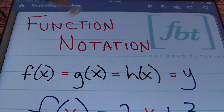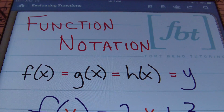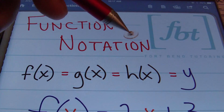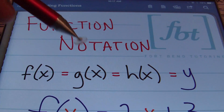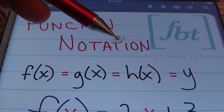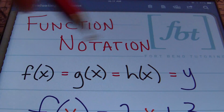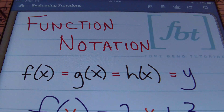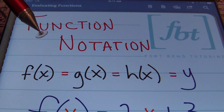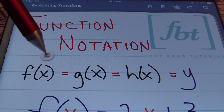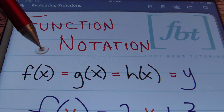Anytime you see f of x, g of x, h of x — all of these are just labels for the variable y. They're just naming the variable y. So instead of having multiple equations where y is already solved for, they'll say the first equation is called f, the second is called g, and the third is called h so you won't confuse the equations. Also note that the variable or number inside of the parentheses is what they're asking you to plug into the equation.